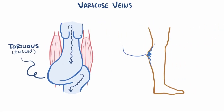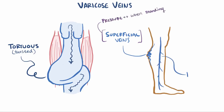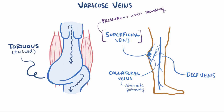This most commonly affects the superficial veins on the surface of the legs, since they see high pressures when standing, rather than the deep veins buried inside the muscles. Oftentimes though, collateral veins are used instead, where other veins can take the blood as an alternate pathway so it doesn't stagnate in the varicose vein, and these tend to actually be the deep veins in the legs.